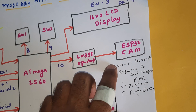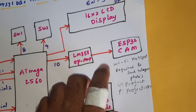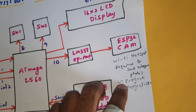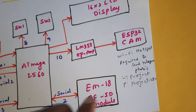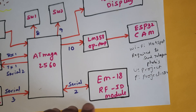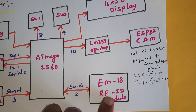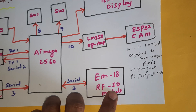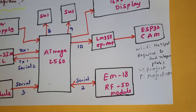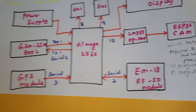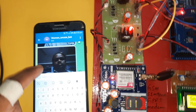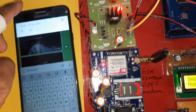The ESP32 CAM module requires a Wi-Fi hotspot internet connection. Username is 'project' and password is 'project1234'. A serial communication module is connected to the EM18 RFID module via serial communication 2. We are getting photo alerts through the Wi-Fi module which also requires a mobile hotspot internet connection.